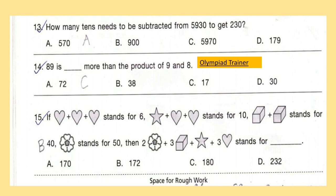Question 15: If heart plus heart plus heart stands for 6, star plus heart plus heart stands for 10, cuboid plus cuboid stands for 40, flower stands for 50, then find the value of 2 flower plus 3 cuboid plus star plus 3 heart.